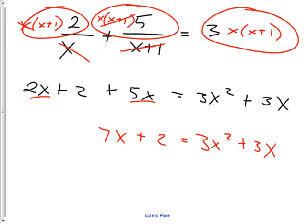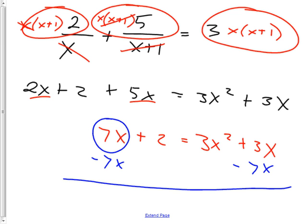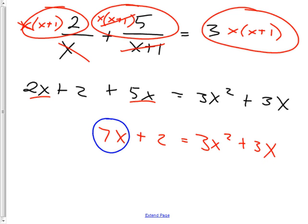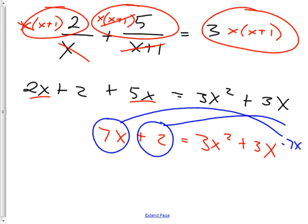I'll show you the way I learned it — to get 7x to the other side, instead of subtracting 7x from both sides, you just move the 7x over and make it negative. It's the same exact thing, just a different way to think of it. And if I want to take the 2 and move it to the other side, I just move it over there and make it negative. So now I've moved everything over and I get: 0 = 3x² + 3x − 7x − 2, and 3x − 7x gives us −4x.